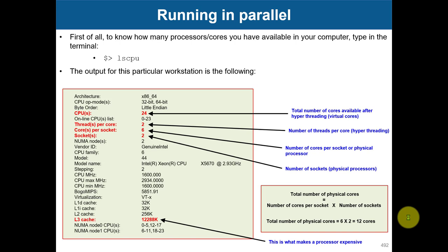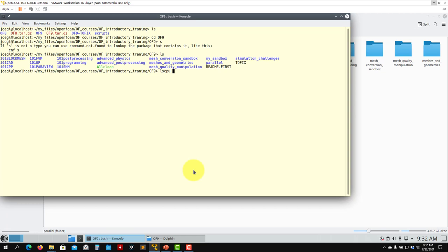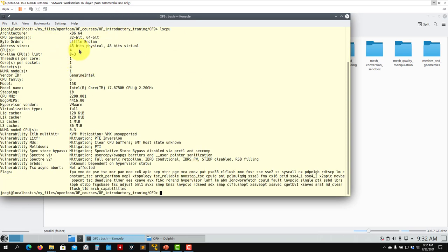The first thing is that you need to know how many processors or cores are available in your computer. This can be a cluster, your laptop, your desktop computer, or anything on the cloud. To check that, you can use the `lscpu` command that comes with most Linux installations. For instance, my computer has four cores available, and that is the maximum number of cores I can use to get something efficient — to scale.